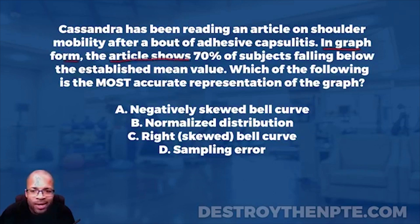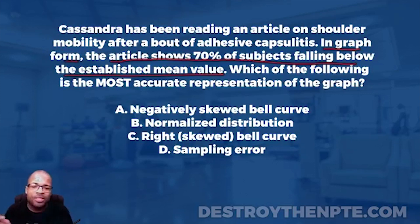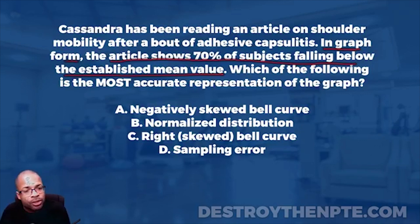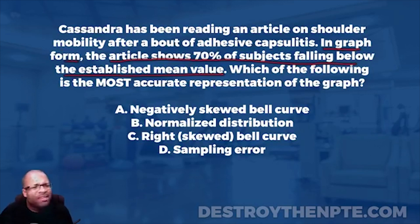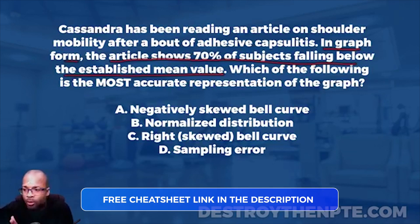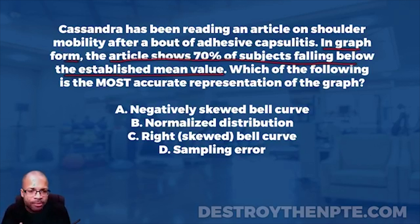For those of you on the podcast, you need to make sure you understand this point because it's going to be really important when looking at the answer choices. The article shows 70% of the subjects falling below the established mean value. The mean is the average, and from PT school you know the bell curve — where was the mean? Right down the middle, where 50% of the population was above it and 50% was below it. That's a normally distributed bell curve.